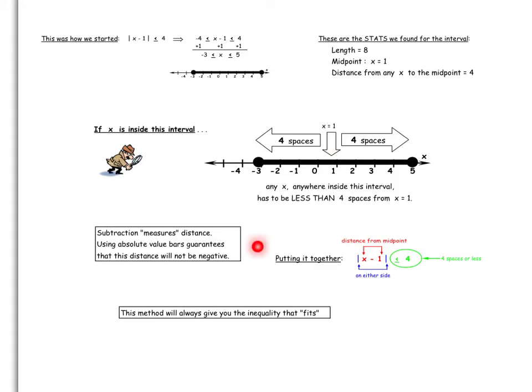Subtraction measures distance, and absolute value bars guarantee that the distance will never come out being a negative number. When we put it all together, we start by putting absolute value signs on either side to guarantee that our subtraction will always give us the positive distance.